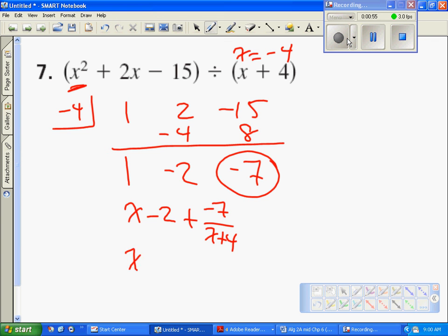I could have written this as x minus 2 minus 7 over x plus 4. That would have also been okay.